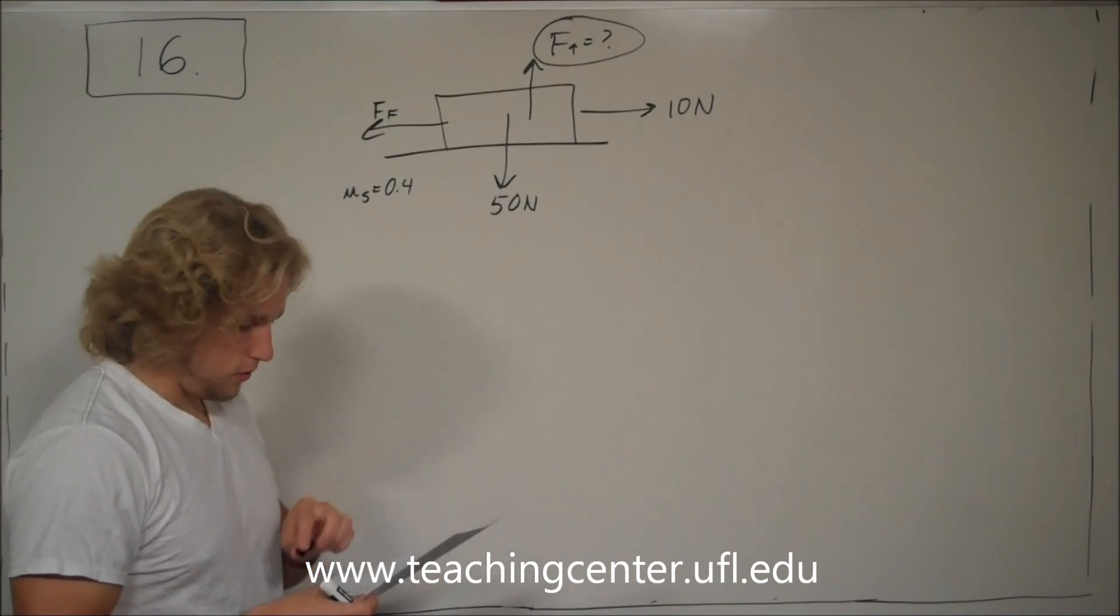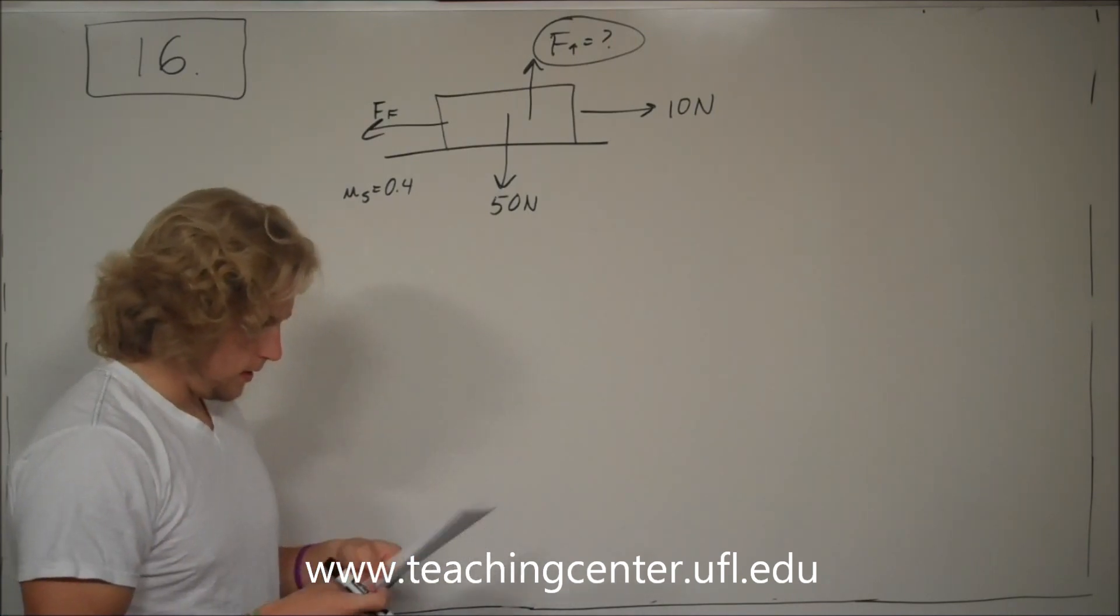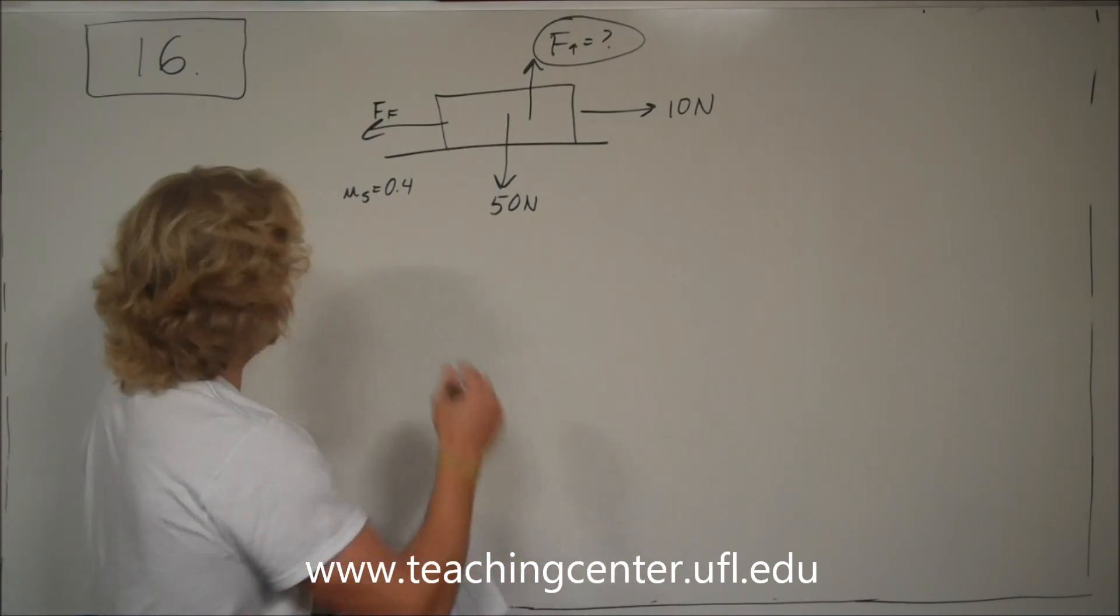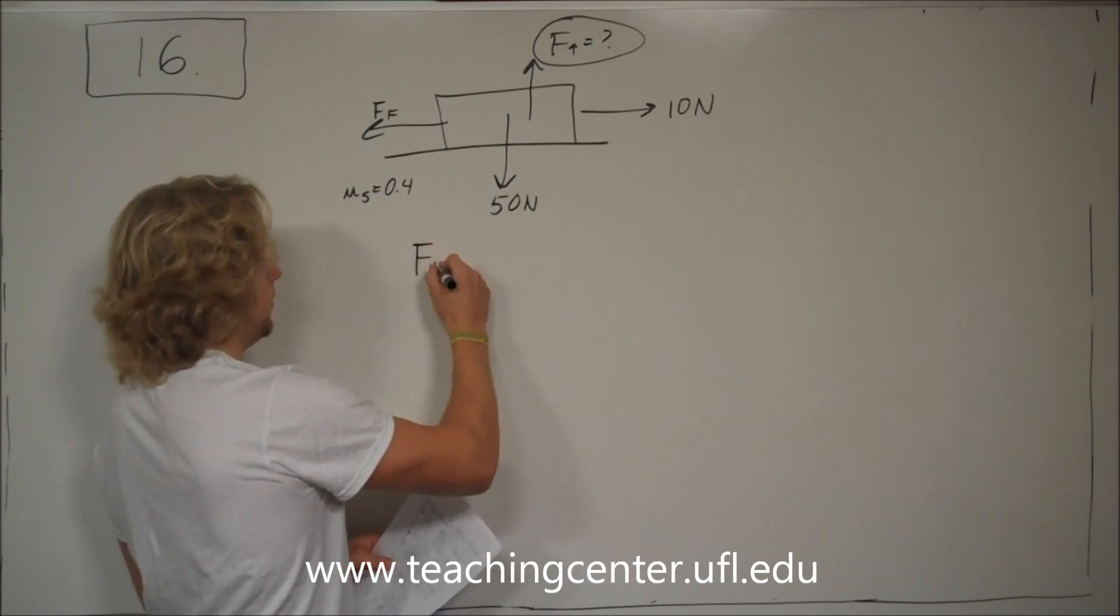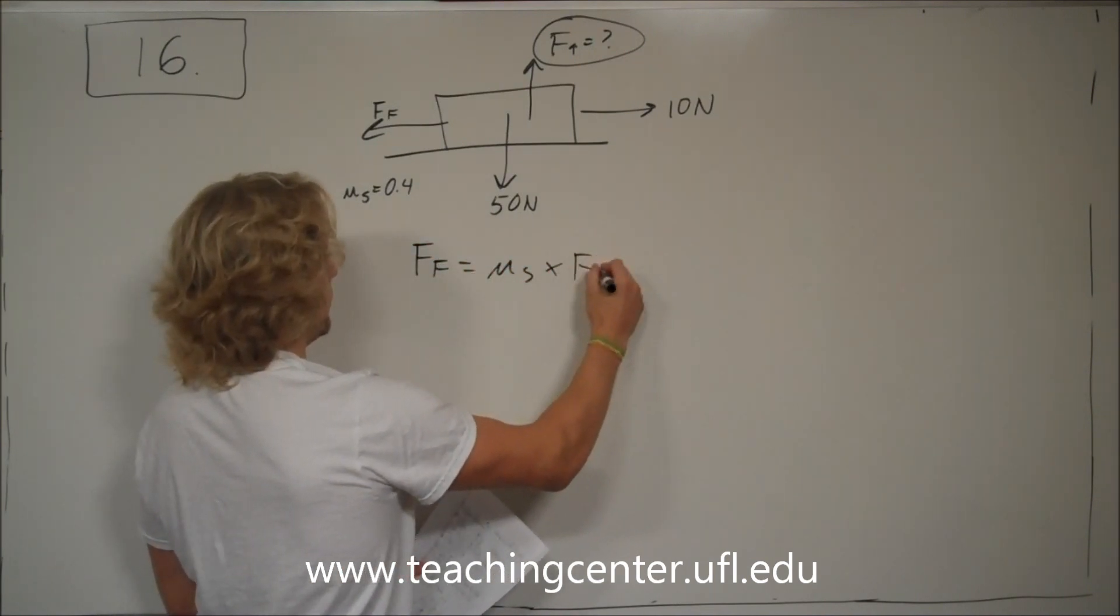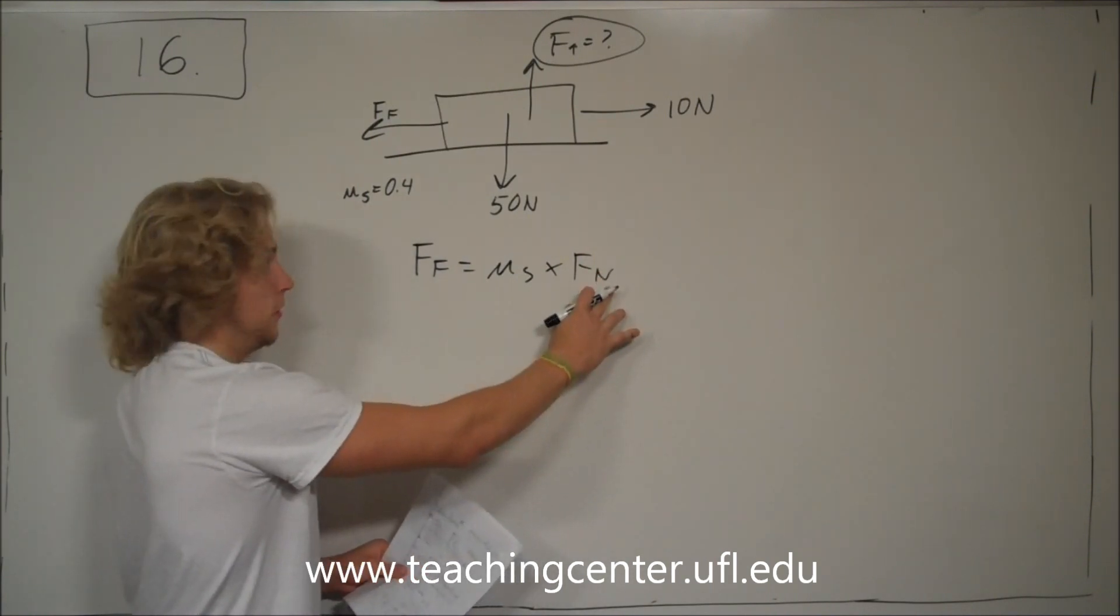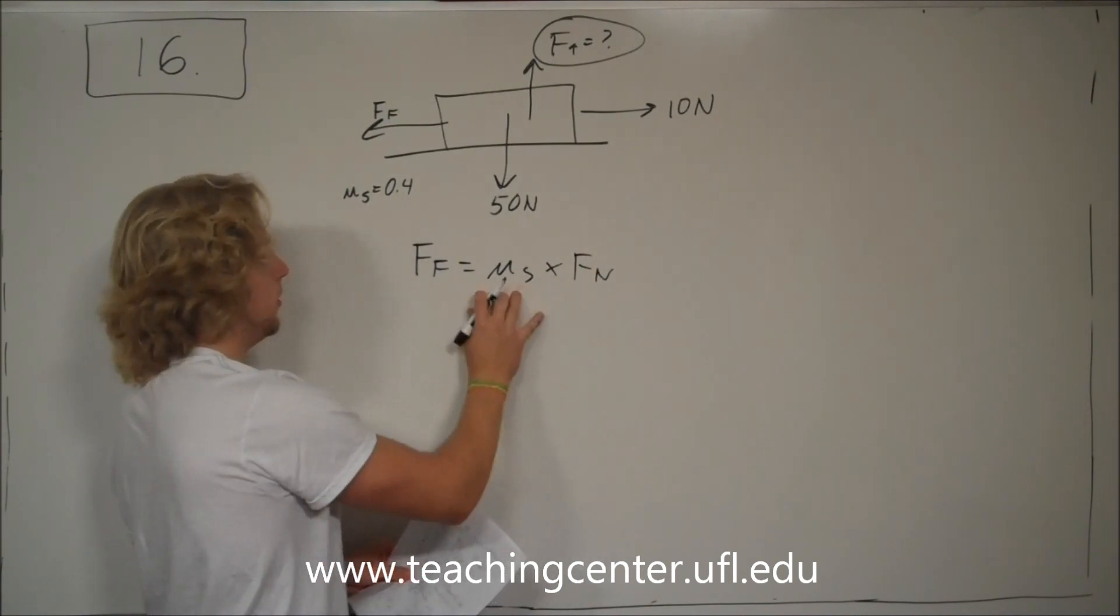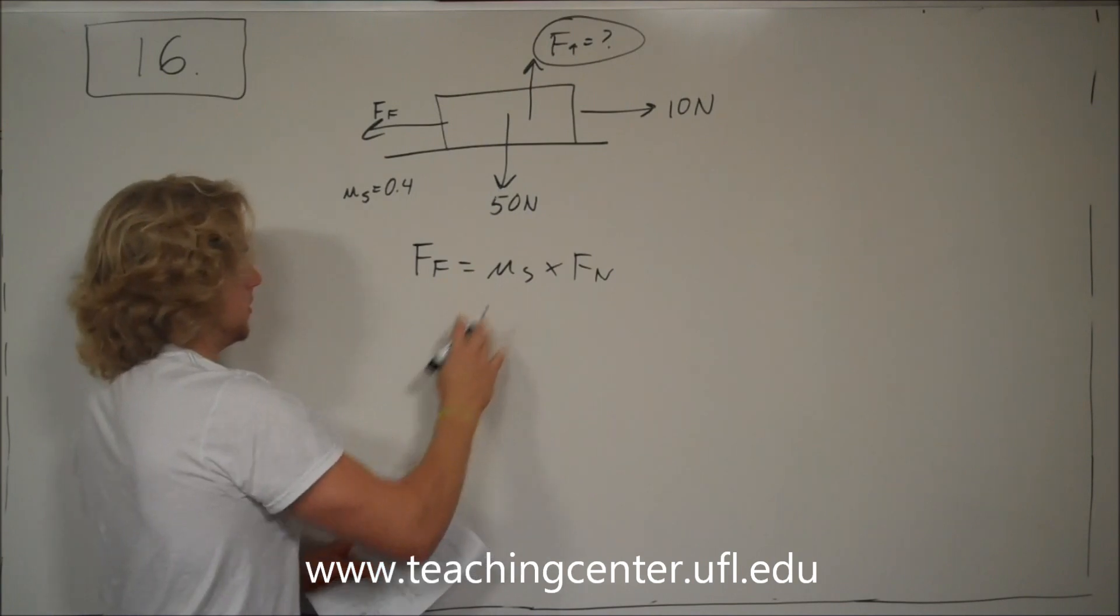So what you have to do is set things up this way. You have frictional force is equal to mu_s times f of n, the normal force. Frictional force, normal force, coefficient of static friction.